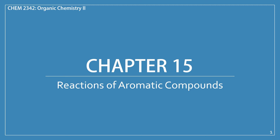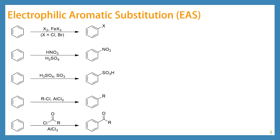In this chapter, we will learn about reactions of aromatic compounds. Our first reaction is the simplest of these. This is the electrophilic aromatic substitution type of reaction, and there are several different reactions that fall under this category.